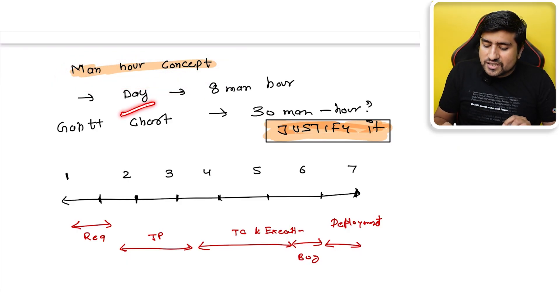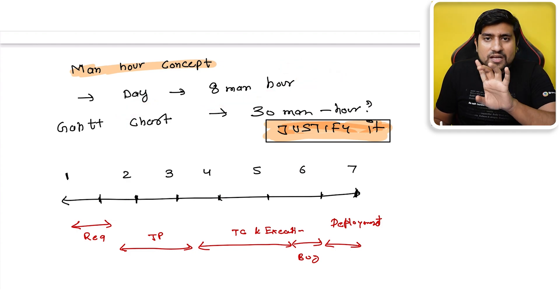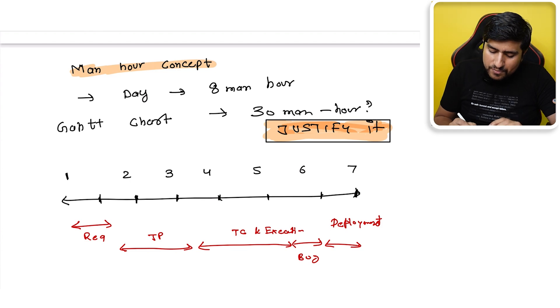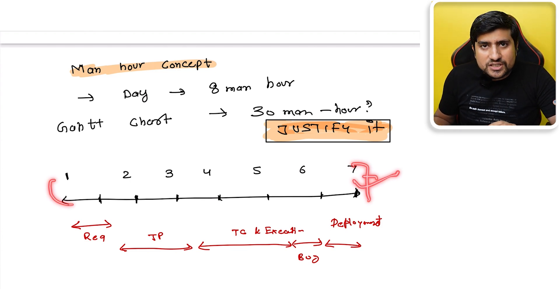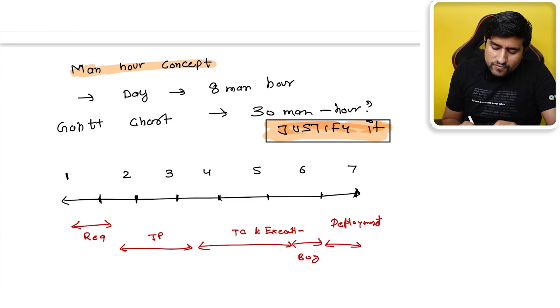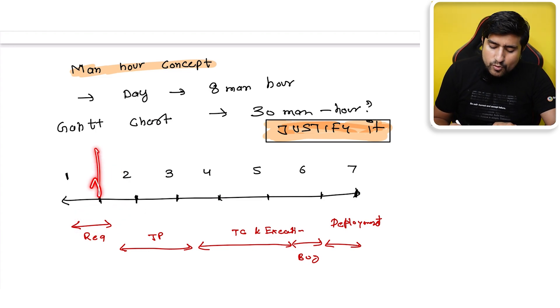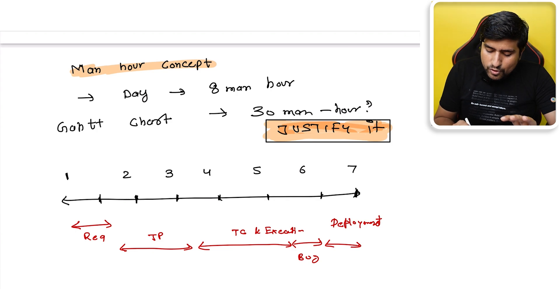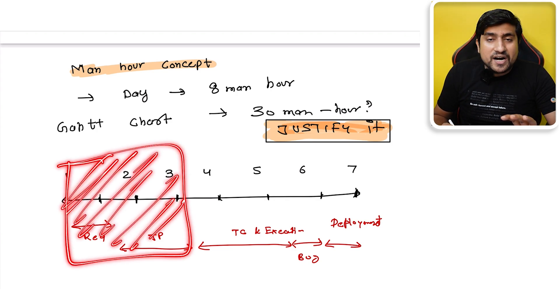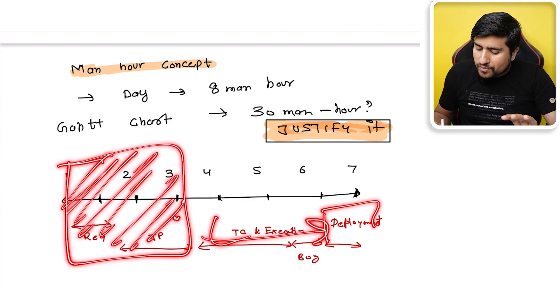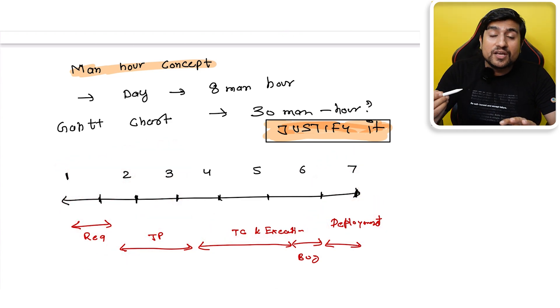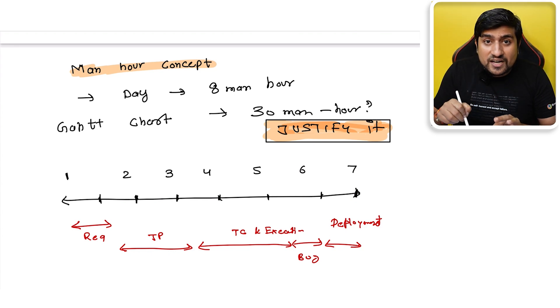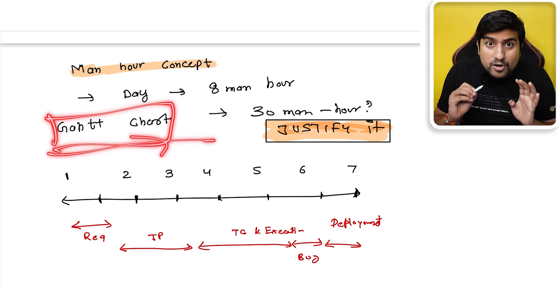The key concept is man-hours. Generally in a day we have eight man-hours — one person gives eight hours. You distribute these across the project. For example, a big e-commerce project might take seven days: one or two days for requirements, then time for test planning, then execution and bug reporting, and the last day for deployment.